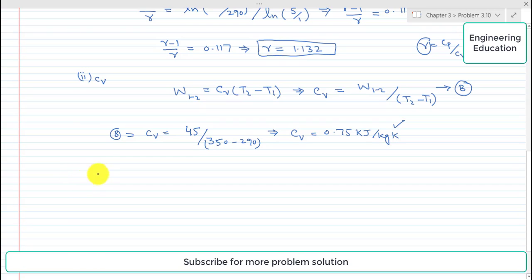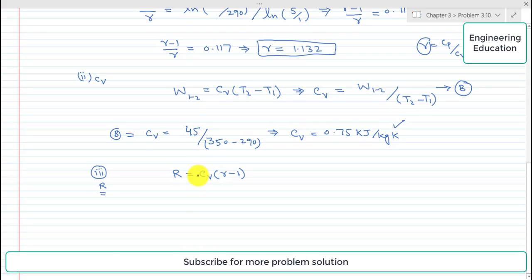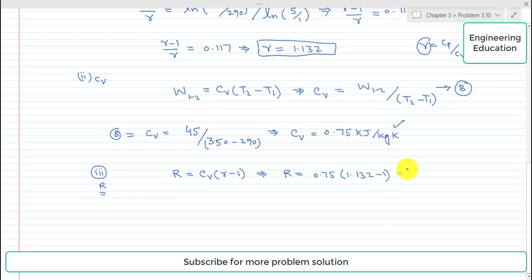For part three, we find the specific gas constant R. The expression is R = Cv × (γ − 1), which is derived in chapter 2 on working fluids, in the topic of perfect gases. Putting in the values: Cv = 0.75, γ = 1.132, so R = 0.75 × (1.132 − 1). Simplifying, R = 0.099 kJ per kilogram per Kelvin.